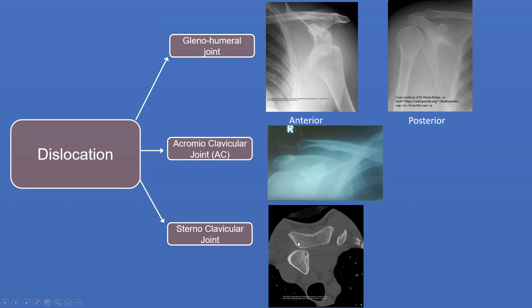A CT scan shows the sternum, the left medial border of the clavicle, and the right clavicle sitting posterior to it — which is obviously going to put pressure on the trachea.